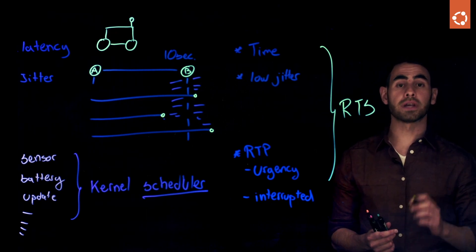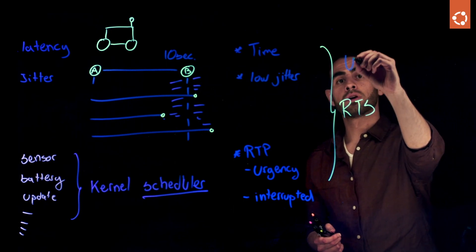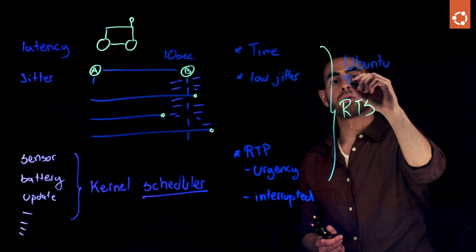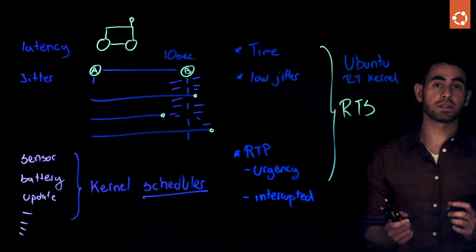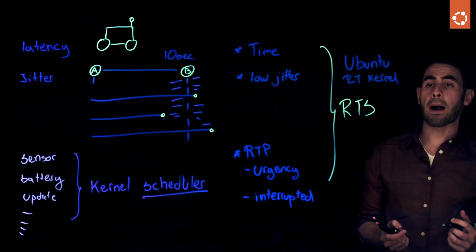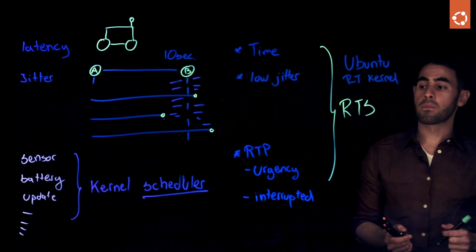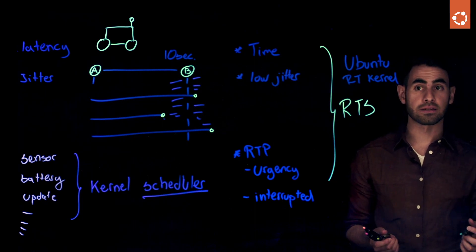Now, how do you enable that using Ubuntu? First, you need Ubuntu real-time kernel. Ubuntu real-time kernel applies the preempt real-time patches, modifying the scheduler from its generic configuration to one that is more sensitive to latency.